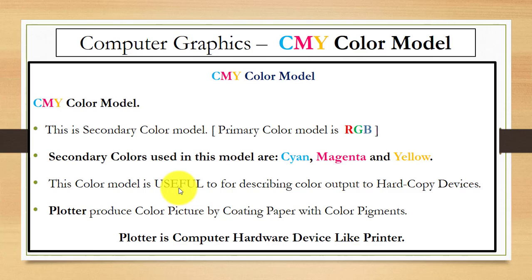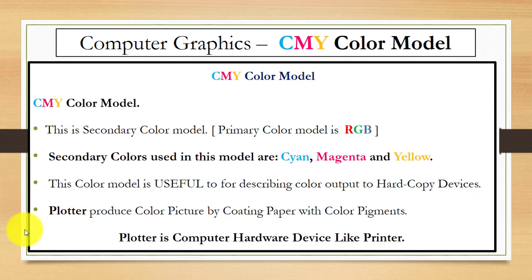Now where is this color model used? We can use this model for describing color output to hard copy devices. For example, we have the plotter. Using a plotter, you can produce a color picture by coating paper with color pigment.